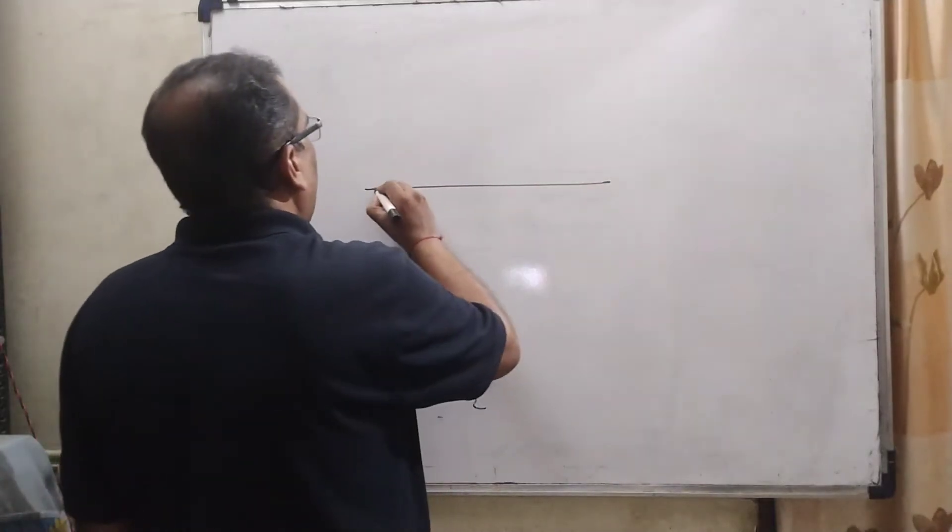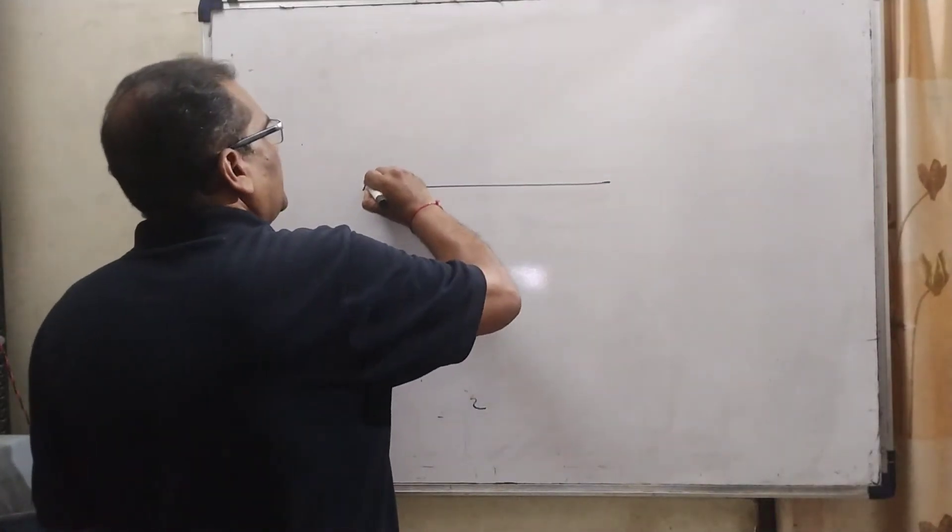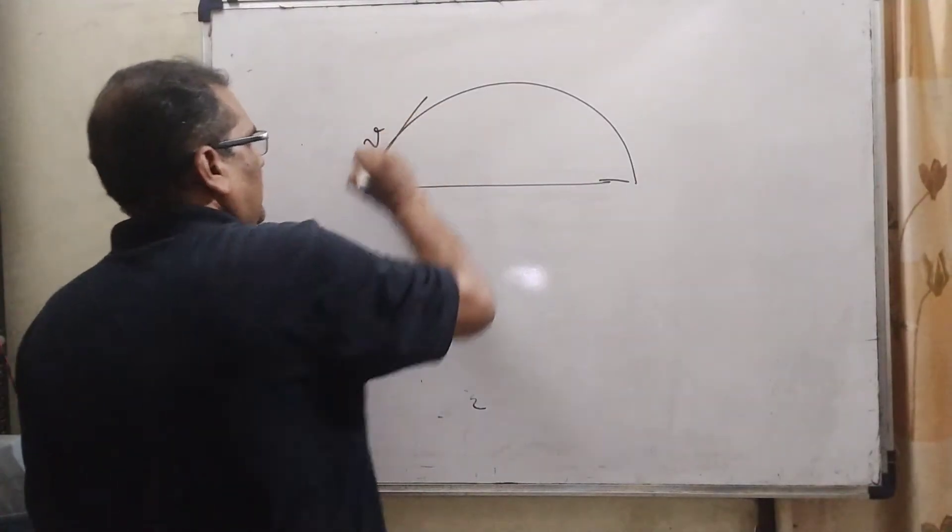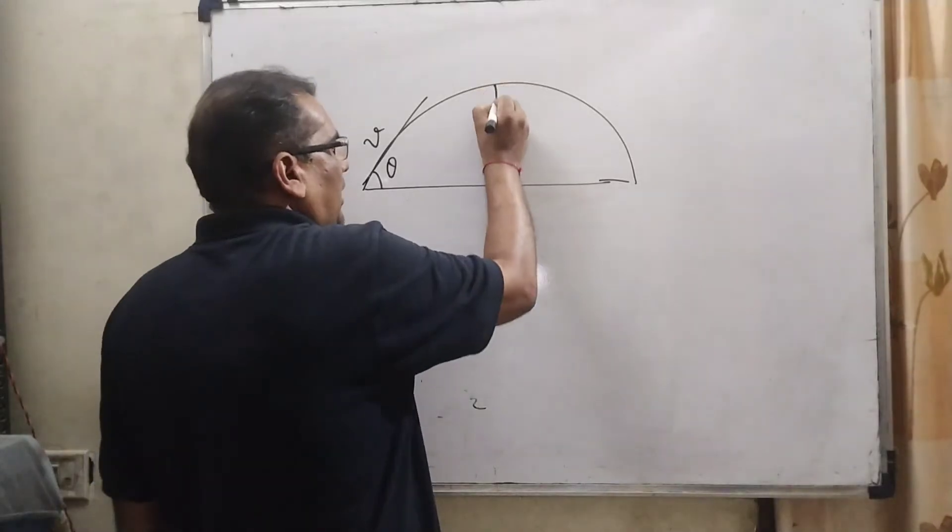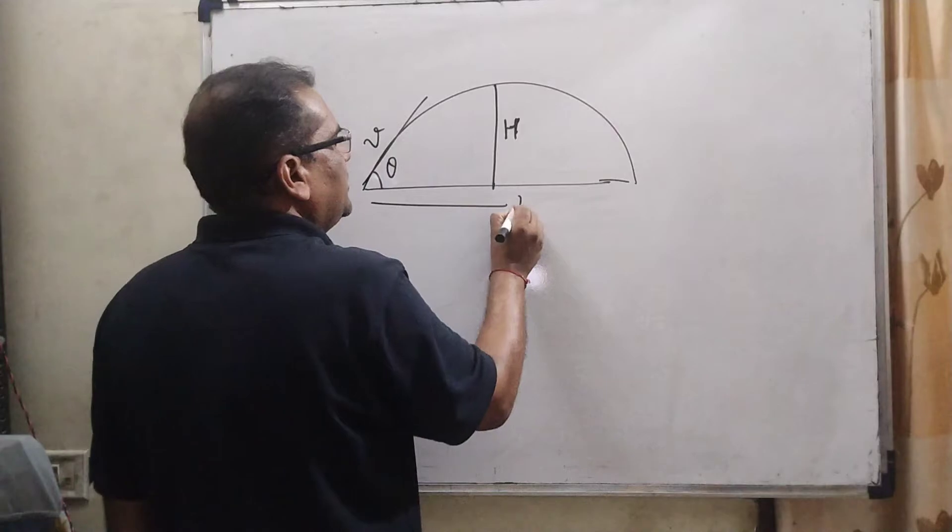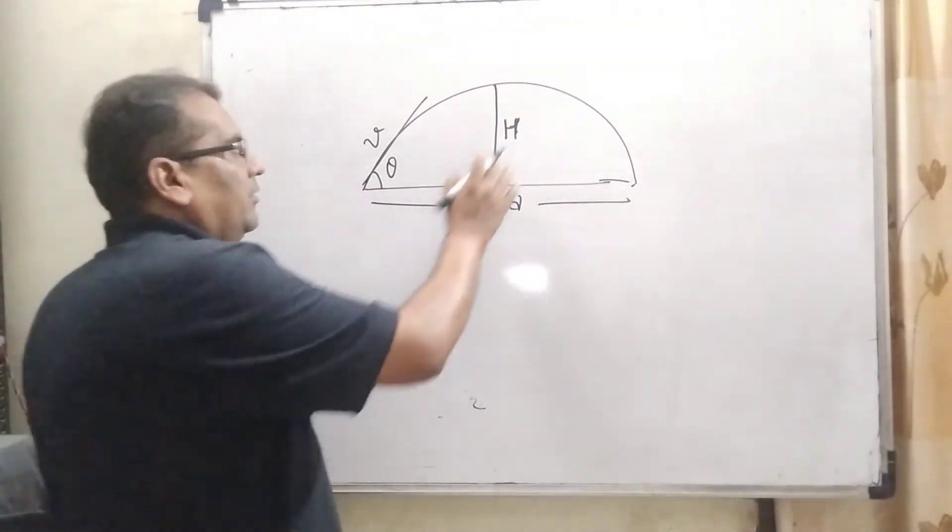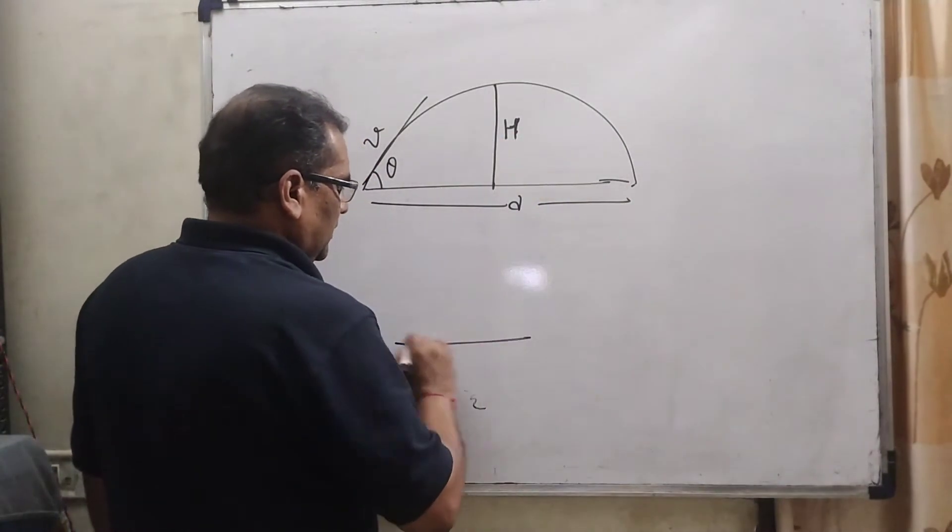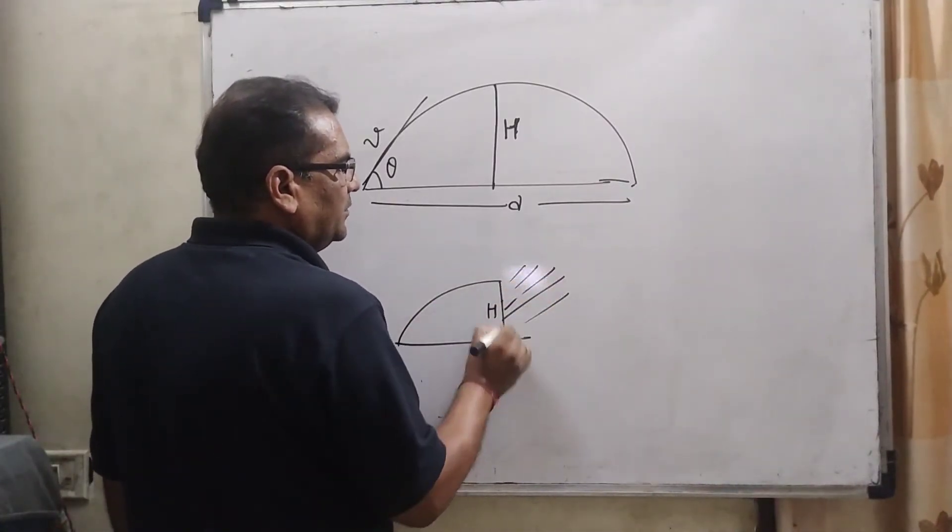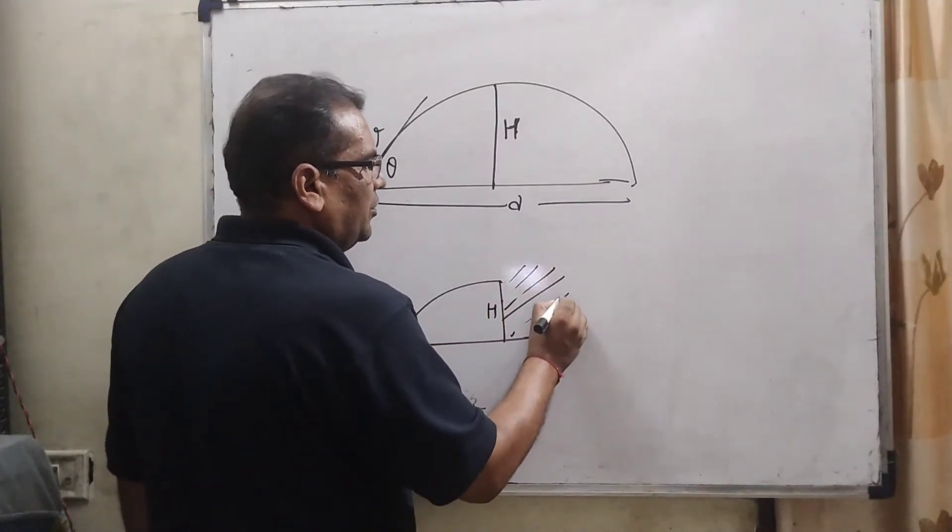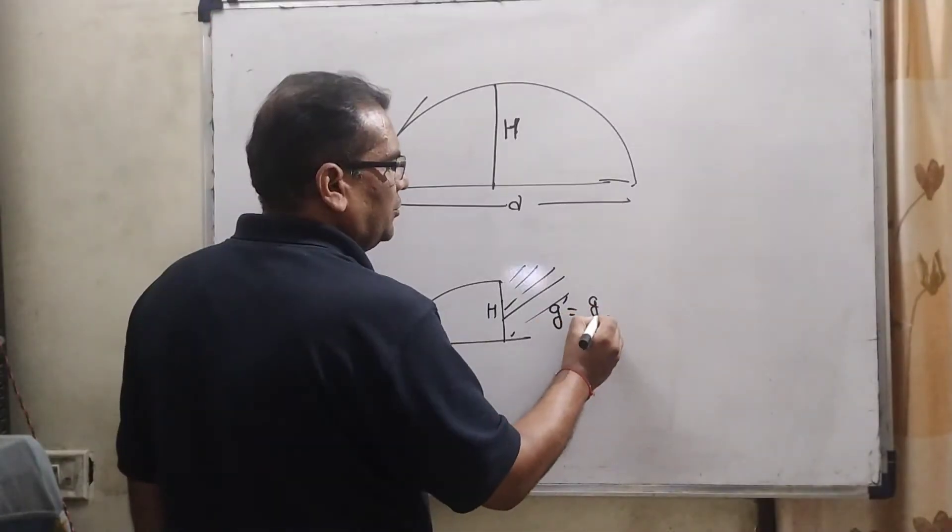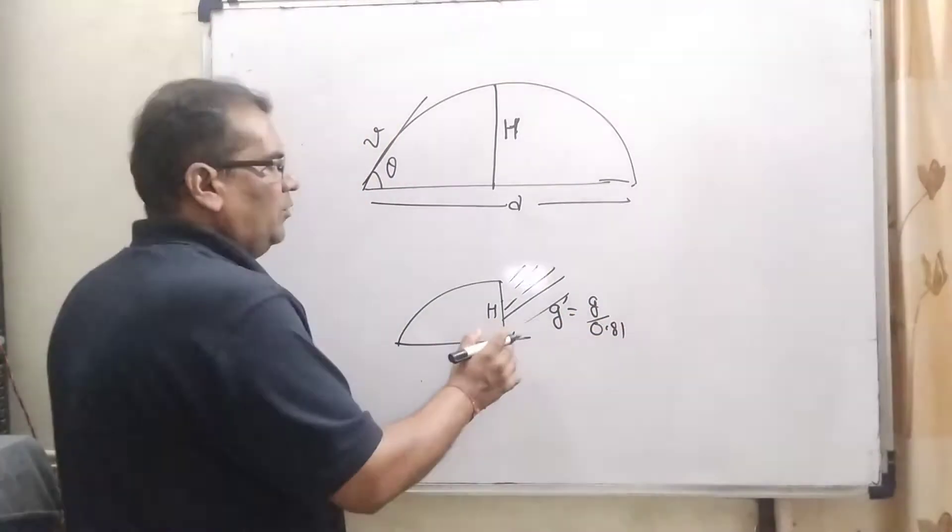Here in the question, we have given a particle is projected making angle theta from the ground with velocity V. At the moment, at maximum height H, the range is D. But when maximum height is H, it reaches another region, then acceleration due to gravity is changed.